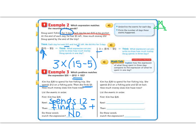Let's look at the next one and see if they do. Kim has $20 to spend on her fishing trip. She spends $12 on a fishing pole and $3 on bait. How much money does she have now? Let's begin the same way as we did the other one, by listing the events in order. First, Kim has $20. Next, she spends $12, right, up in our story. She also spends $3. Spends $3. So we could say that we could add the 12 and the 3 because both of those are being spent and then subtract once from the 20. So do these words match the expression? Yes.